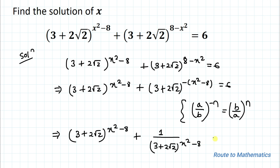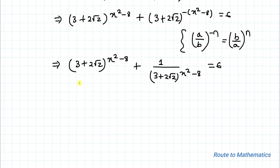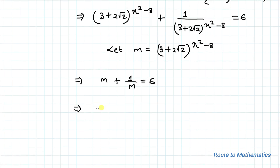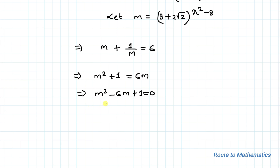Now let m = (3 + 2√2)^(x² - 8), so our equation becomes m + 1/m = 6. Taking LCM, we get m² + 1 = 6m, which gives us m² - 6m + 1 = 0. This is a quadratic equation, and to find the value of m we'll apply the quadratic formula.